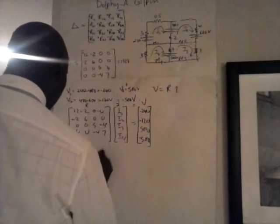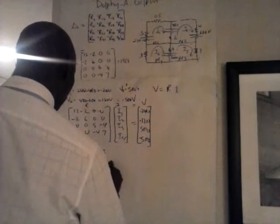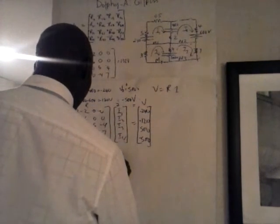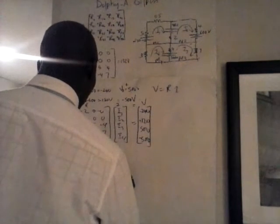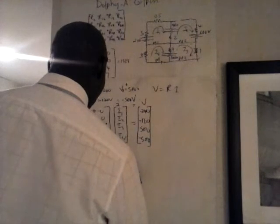And this is minus 2, 6, 0, 0, 0, 0, 0, 5 and minus 4, and 0, 0, minus 4 and 7. So that is equal to the numerator value n and so we find the determinant of this for one column and that will give us the numerator value.